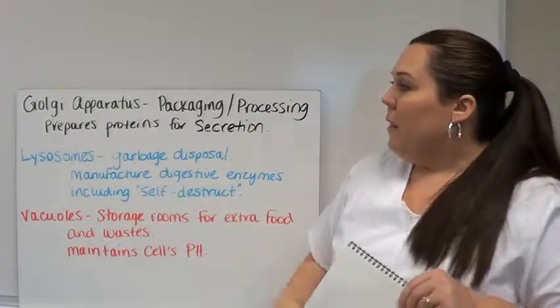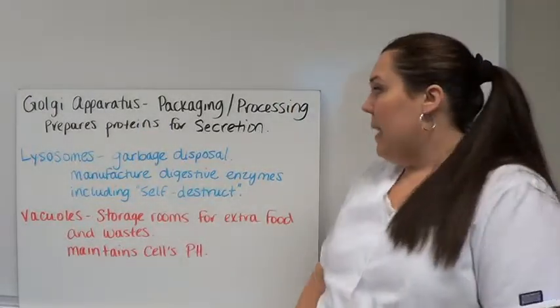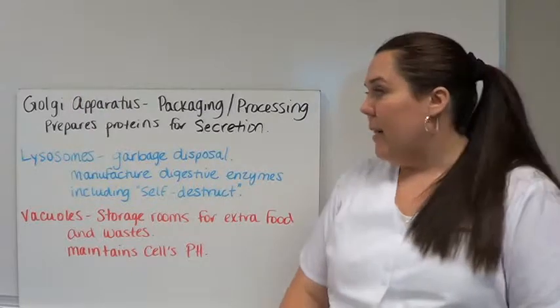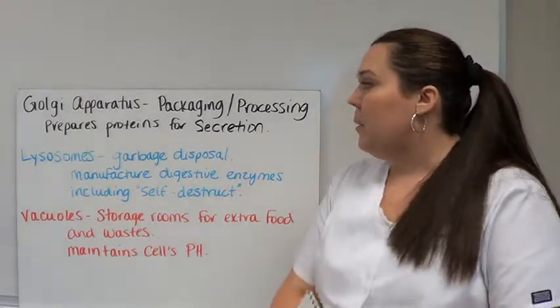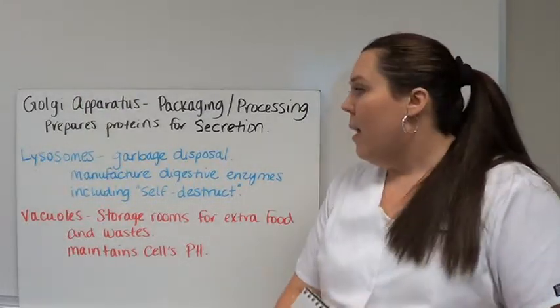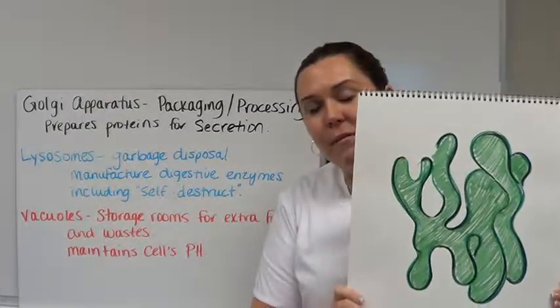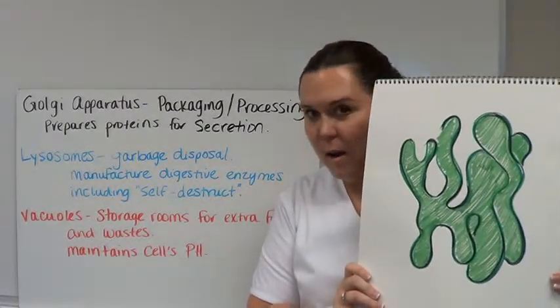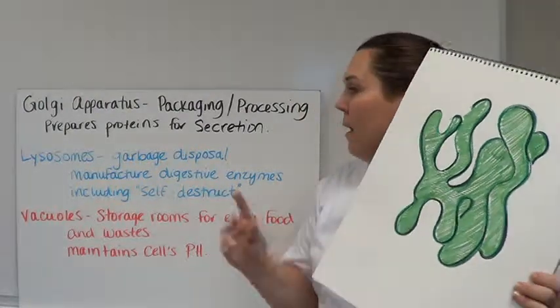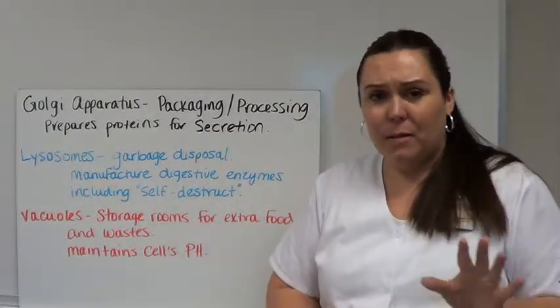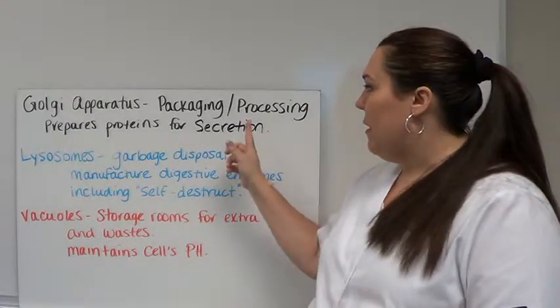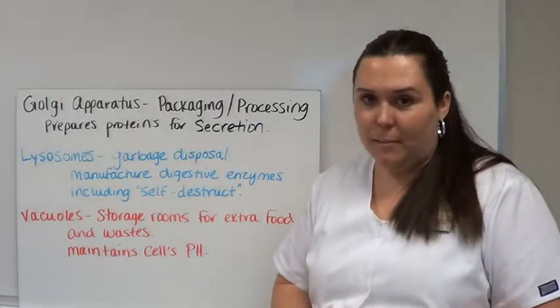Then we come to the Golgi apparatus. The Golgi apparatus is the packaging and processing plant of the cell. It prepares proteins for secretion. The Golgi apparatus is a funny-looking, seaweed-looking object within the cell. We just need to know that it's the packaging and processing plant.